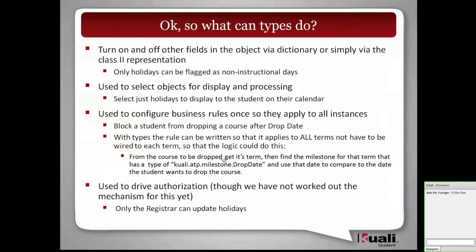So, what can types actually do? In Java, developers know you can override methods and implement different behavior. Well, these things are just strings stored on the object, but we use them in different ways to control the processing of all objects.